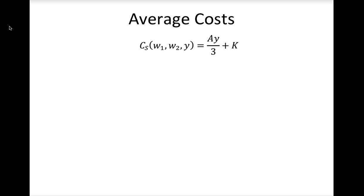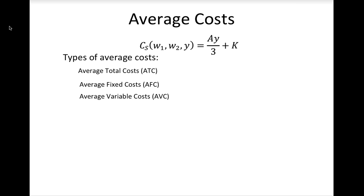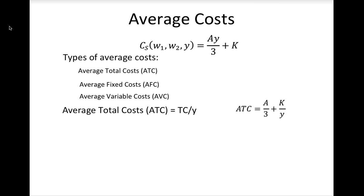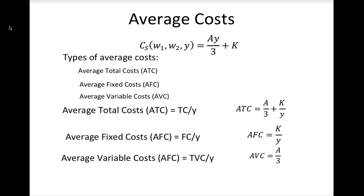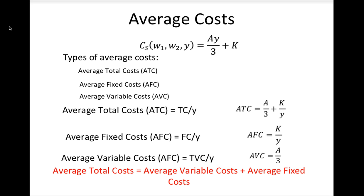In the short run, a firm has three types of average costs: average total costs, average fixed costs, and average variable costs. To find average total costs, divide total cost by output — giving a over 3 plus k divided by y. Average fixed costs are k divided by y. Average variable costs are constant and equal to a over 3. Note that average total costs equal the sum of average variable costs and average fixed costs.